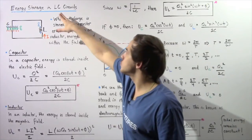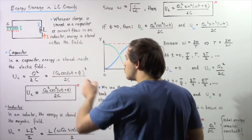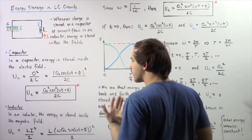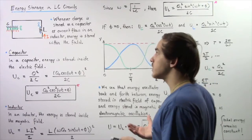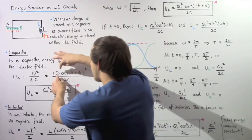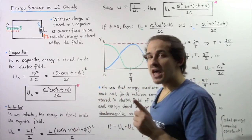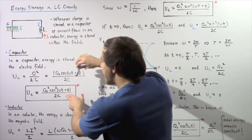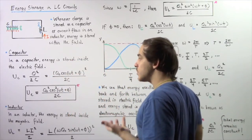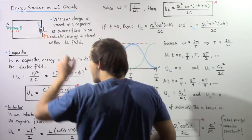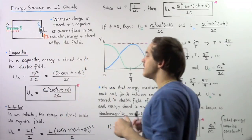In the previous lecture on LC circuits, we showed that q is equal to q₀ cosine of ωt plus φ, where φ is our phase angle, t is the time, ω is the angular velocity, and q₀ is the quantity of charge stored on the plates at time zero. If we square this and assume the phase angle is zero at time zero, we get cosine of zero, which is one. That implies at time zero, our quantity of energy stored on the capacitor is equal to q₀ squared divided by 2C — so all the energy is stored within the electric field inside our capacitor.